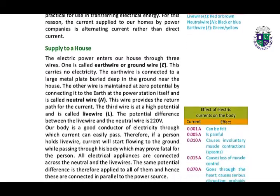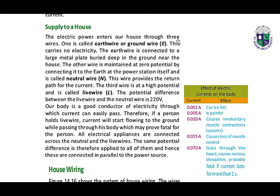The electric power enters our house through three wires. One is called the earth wire or ground wire — this carries no electricity. The earth wire is connected to a large metal plate buried deep in the ground near the house. Another wire is maintained at zero potential by connecting it to the earth at the power station itself and is called neutral wire N. This wire provides a return path for the current. The third wire is at a high potential and is called the live wire. The potential difference between the live wire and the neutral wire is 220 volts.